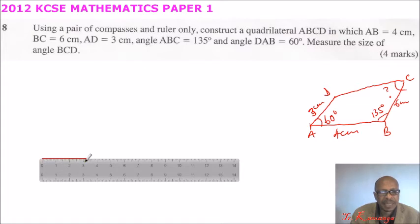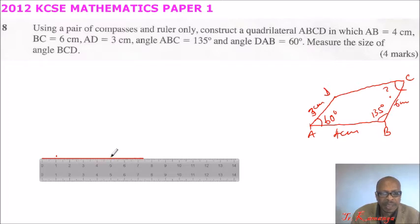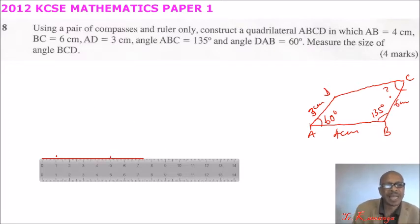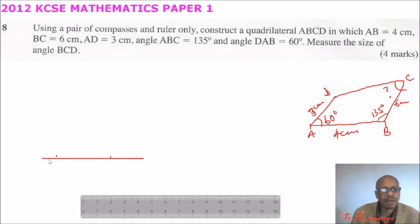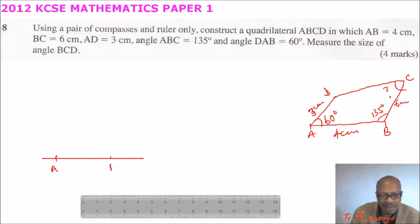Let's start from here and draw a line. This line is 4 cm, so we mark there — 1, 2, 3, 4. That is where we have our 4 cm. So with that, we have obtained our points A and B. This is A and this is our B.